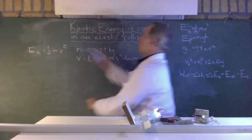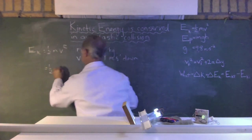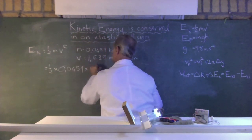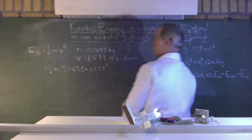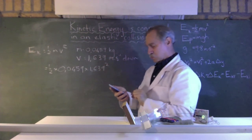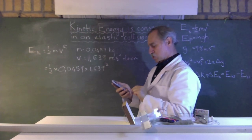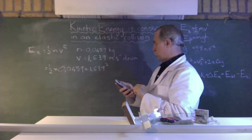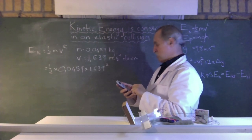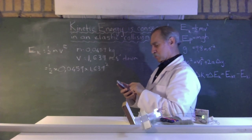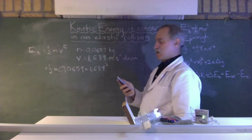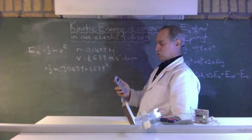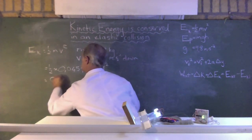So, calculating the kinetic energy in this equation equals a half times the mass 0.0459 times V, which is 1.639 squared. Which is 0.5 times 0.0459 times 1.639 squared. And our kinetic energy comes to 0.06 joules.